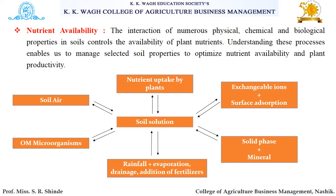Nutrient availability is the interaction of numerous physical, chemical, and biological properties in soils which controls the availability of plant nutrients. Understanding these processes enables us to manage selected soil properties to optimize nutrient availability and plant productivity.